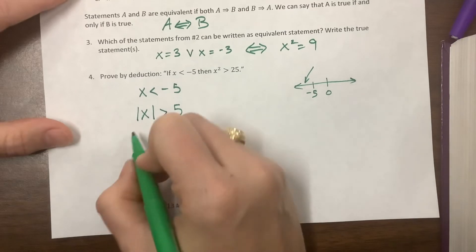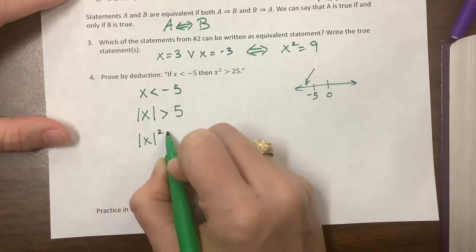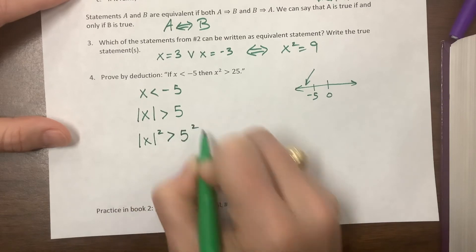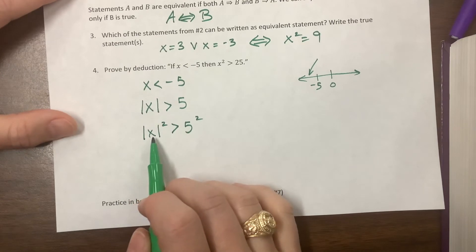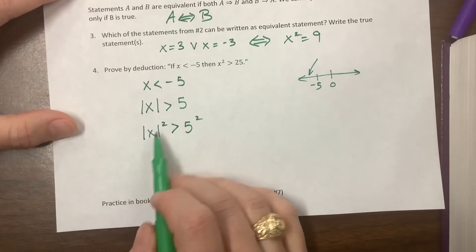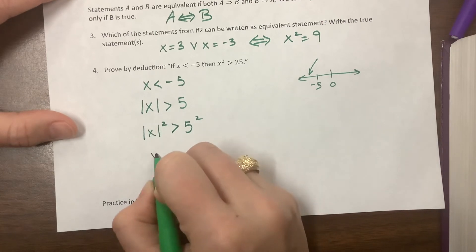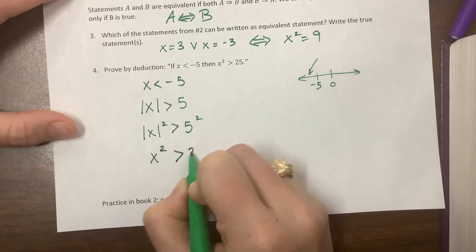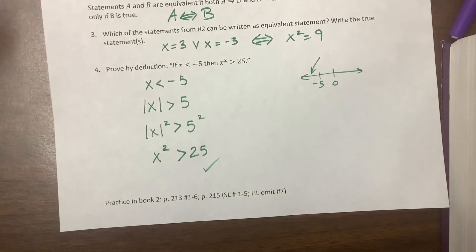If that's true, then |x|² > 5² - I just squared both sides. Keeping in mind that the square would take care of a negative anyway, we can say that x² > 25, and now we've completed our proof.